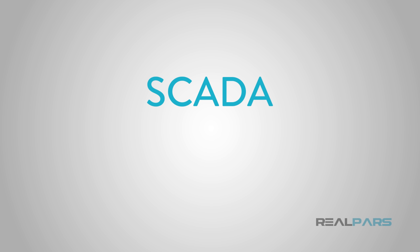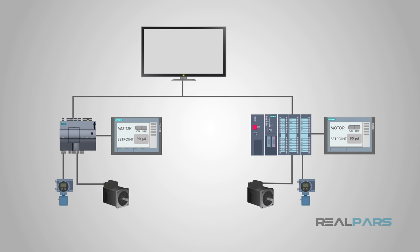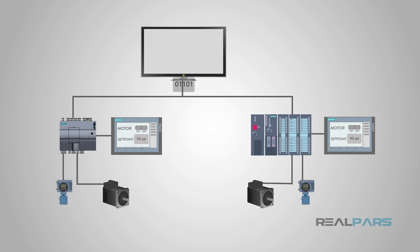Let's dive into SCADA. SCADA stands for Supervisory Control and Data Acquisition. These are used for monitoring and controlling large areas, typically a full site or plant. SCADA systems are a combination of many systems, including sensors, RTUs or remote terminal units, and PLCs. Data from all of these systems is then sent to the central SCADA unit, and that SCADA unit has its own HMI. This is why a lot of people get confused and think SCADA and HMI are one in the same.